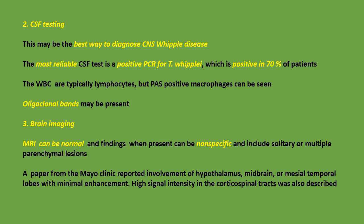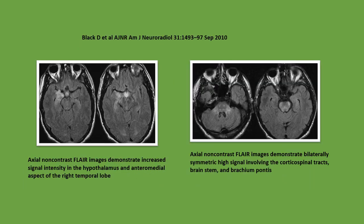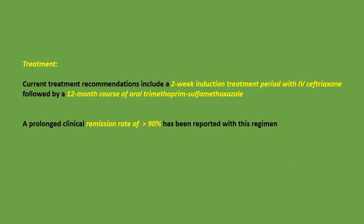Brain imaging: MRI can be normal, and findings when present can be non-specific, including solitary or multiple parenchymal lesions. A Mayo Clinic paper reported involvement of the hypothalamus, midbrain, or mesial temporal lobes with minimal enhancement; high signal intensity in the corticospinal tracts was also described. The MRI on the left demonstrates increased signal intensity in the hypothalamus and anteromedial right temporal lobe; the MRI on the right shows bilaterally symmetric high signal involving the corticospinal tracts, brainstem, and brachium pontis.